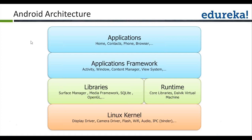Communication happens sequentially: your application communicates with the application framework, the application framework communicates with the embedded libraries, and finally the embedded libraries give instructions to the Linux kernel. As a beginner in Android development, we will not worry much about the lower three parts — framework, libraries, and Linux kernel. We just use the available APIs and create our applications.